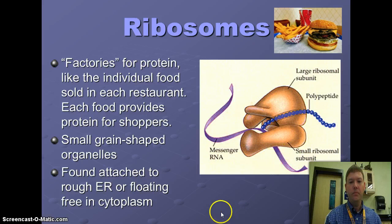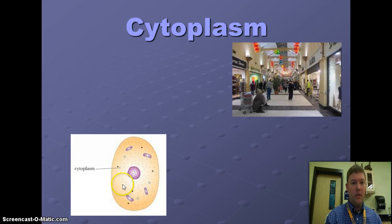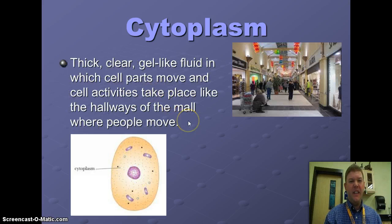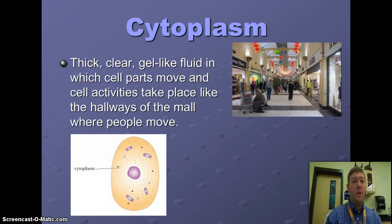What is the cytoplasm? It's all this gel-like stuff that we see floating around — thick, clear, gel-like fluid in which cell parts move and cell activities take place. Think of cytoplasm as the hallways of a mall where people move back and forth. Same thing here: cell parts and activities are going back and forth throughout the cell.